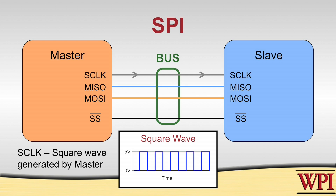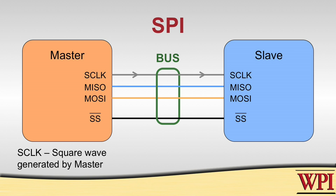Rising and falling edges on that clock signal drive the data. The MISO line — master input, slave output — is, as its name implies, a data line where data is going from the slave, the slave is the output, to the master, which is the input. So bits are traveling from the slave to the master.